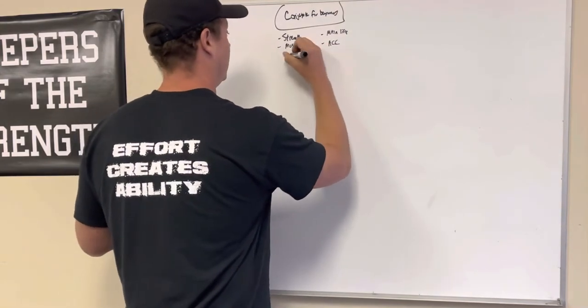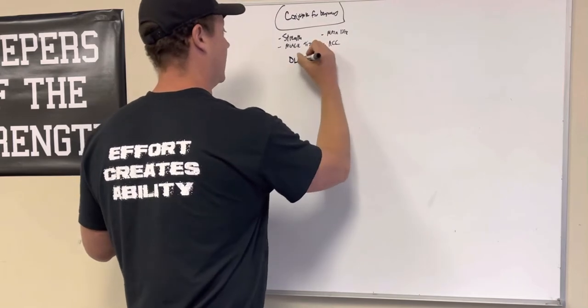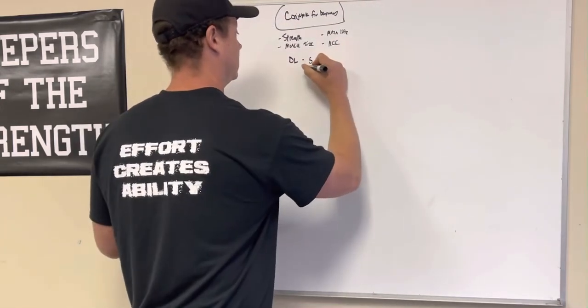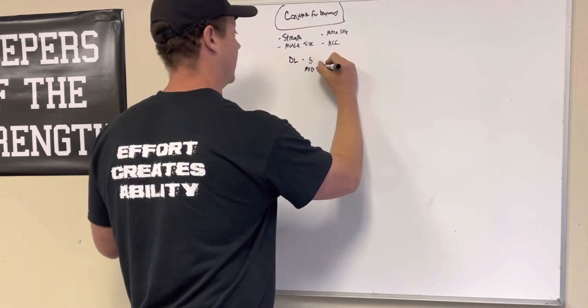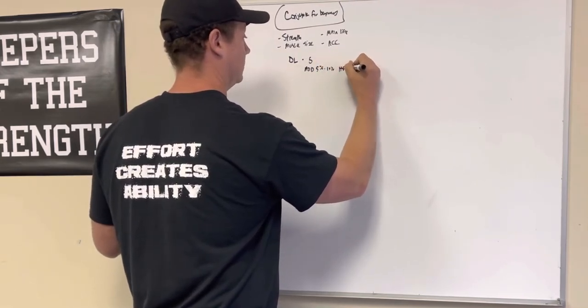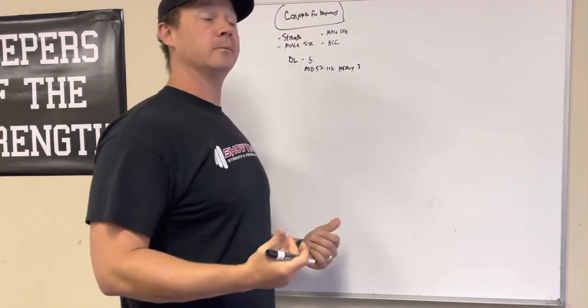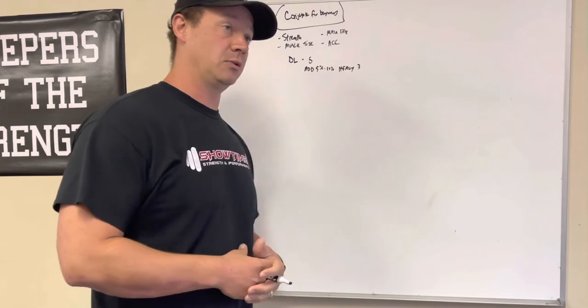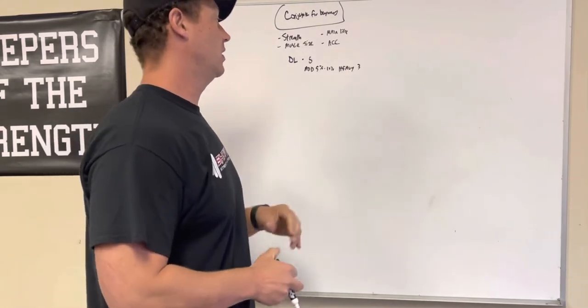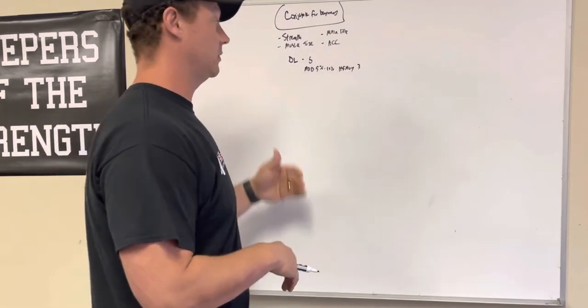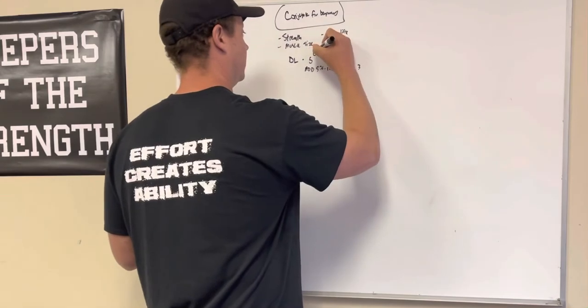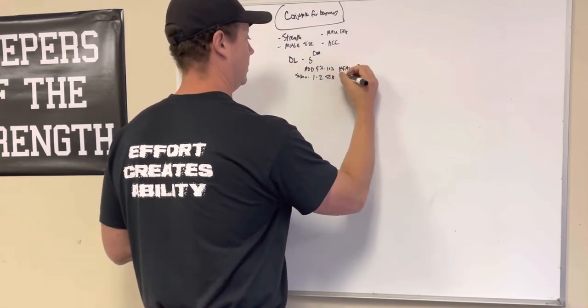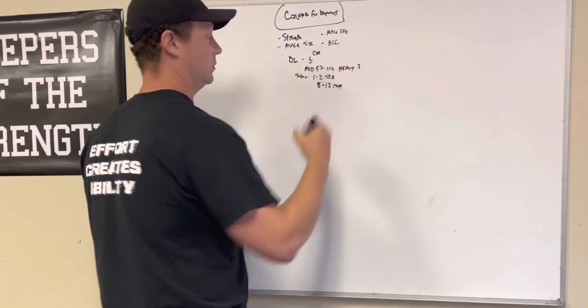But for strength, let's say your main movement is a deadlift. Maybe what we do is work up to a heavy set of five, then add five to ten percent for a heavy three. So if you're doing this conventional, you're working up to a heavy five, let's say your heavy set of five is 315. You get five pretty easily, you add 10 percent, so you're talking about roughly 350 pounds for three.